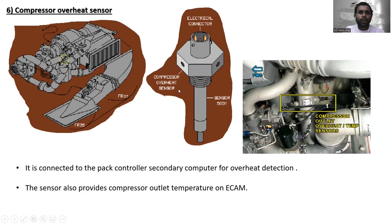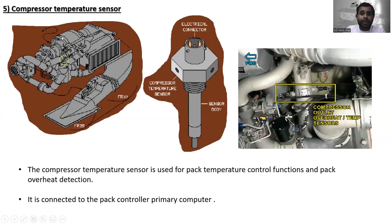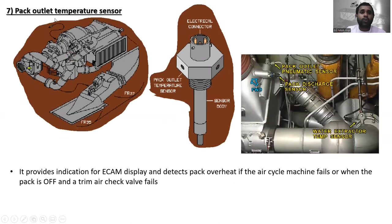The next component is the compressor overheat sensor. The compressor overheat sensors are located here — this is the electrical connector, the sensor body, and the installation locations for the compressor overheat temperature sensor. It is connected to the pack controller secondary computer for overheat detection. The sensor also provides compressor overheat temperature on ECAM.